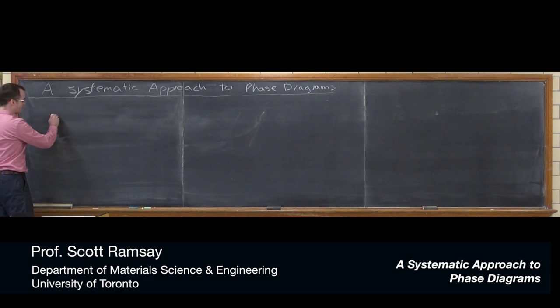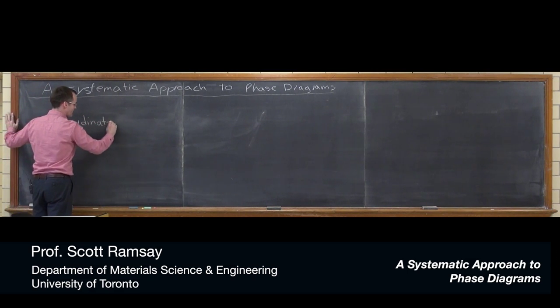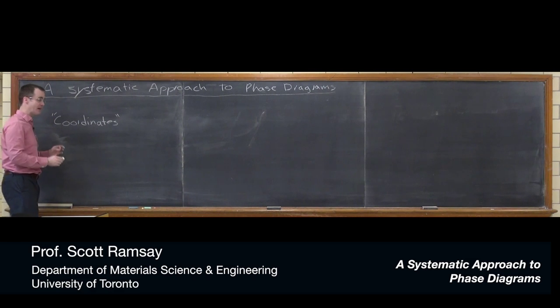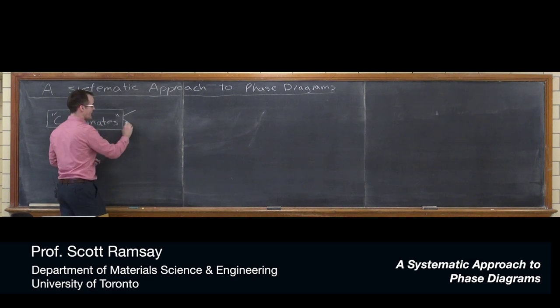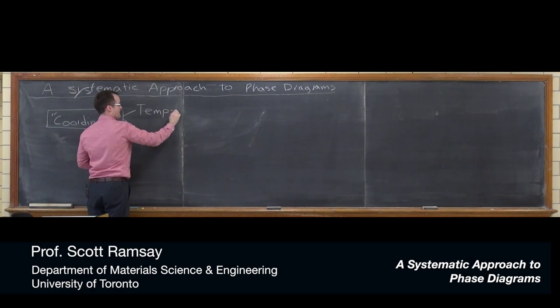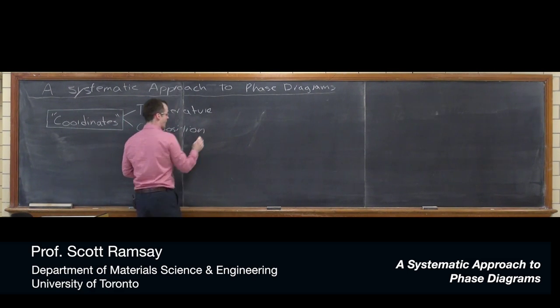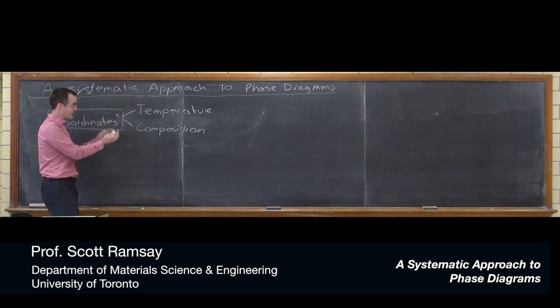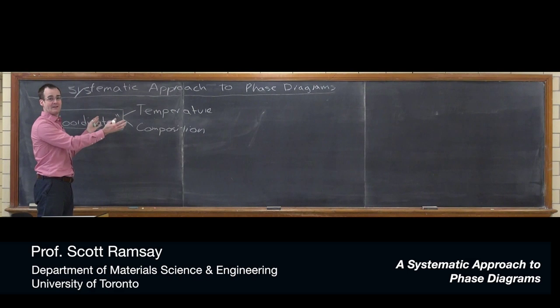So what I like to always say with phase diagrams is you start off with a set of coordinates. Now I should tell you that's not really a formal term that's applied to phase equilibria. It's just a name that I like to use to remind us that we've got temperature plotted on the vertical axis and composition on the horizontal axis. And really in the most basic sense, that's what a phase diagram is all about. Plotting these two things, temperature and composition, and for various combinations of those, telling us the equilibrium structure.